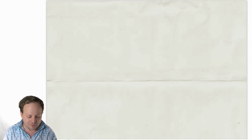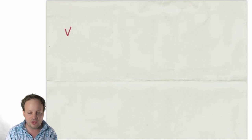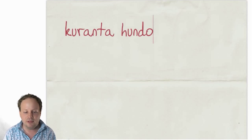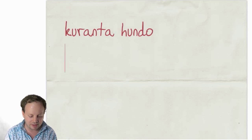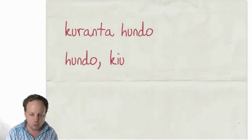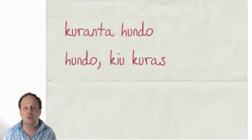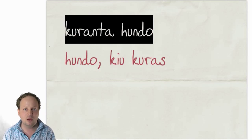Another way you will see these forms is used as an adjective. So you'll see, for instance, KURANTA HUNDO, and that means 'a running dog.' This can be a bit hard for some people to translate in their head. The best way is to look at it like this: HUNDO KIU KURAS — 'a dog who runs' — is the same as KURANTA HUNDO, 'a running dog.'